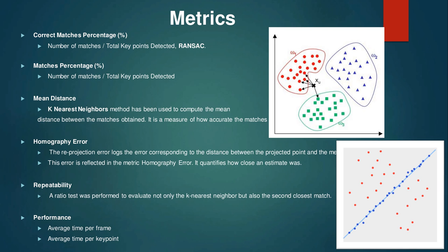The next metric is repeatability. It is a ratio test performed to evaluate not only the K-nearest neighbors but also the second closest match. To assess the overall performance, it is important to consider how time-consuming the algorithms are for real-world applications. The last metrics are average time consumed per frame and average time consumed per keypoint.